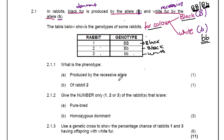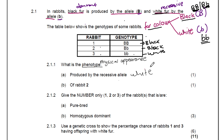The first question, 2.1.1: What is the phenotype? Remember, when we talk about phenotype we are talking about the physical appearance — what we can see. So when looking at the fur color of our rabbits, we either see a black fur rabbit or a white fur rabbit. What is the phenotype produced by the recessive allele? The recessive allele is white, so the phenotype produced is white.